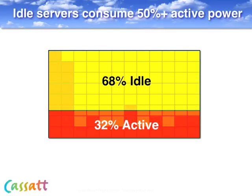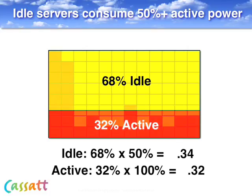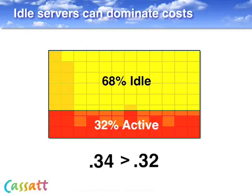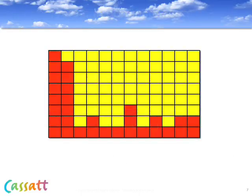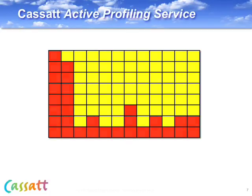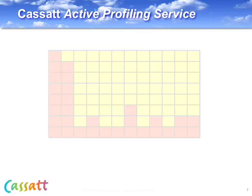Idle servers may use as little as half the power of active servers, but that still means we're paying more to power and cool idle servers. And of course, there's the wasted capital for underutilized servers in data center space. So the first step to efficiency is understanding. You need to have good information on the actual state and usage of the data center resources.